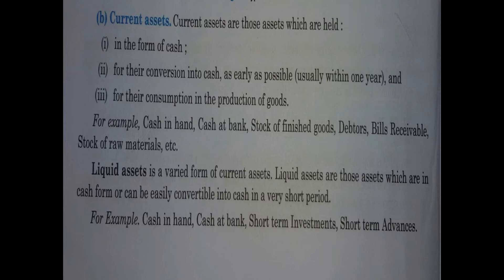Current assets are those held in the form of cash or used for day-to-day business life. These are the liquid assets you can use within one year. Current assets can be converted into cash as early as possible. Examples include cash in hand, cash at bank, stock of finished goods, bills receivable. Liquid assets are a specific form of current assets — those in cash form or easily convertible into cash in a very short period, such as cash in hand, cash at bank, and short-term investments.